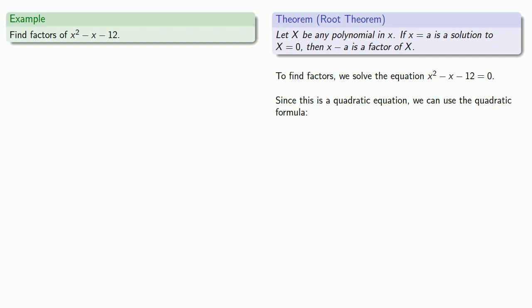Since this is a quadratic equation, we can use the quadratic formula. So we'll substitute the values of our coefficients into the quadratic formula. And when we evaluate the quadratic formula, we'll have our solutions. x equals 4 or x equals negative 3.